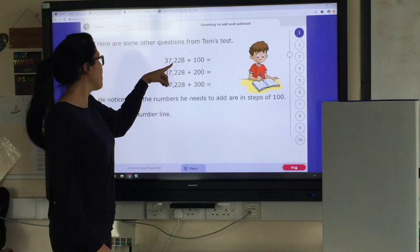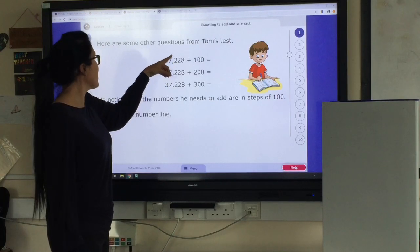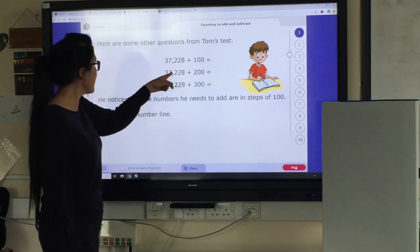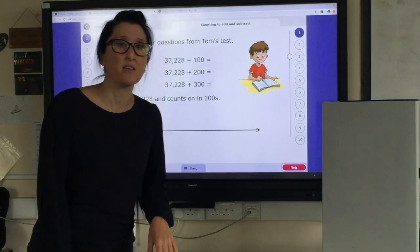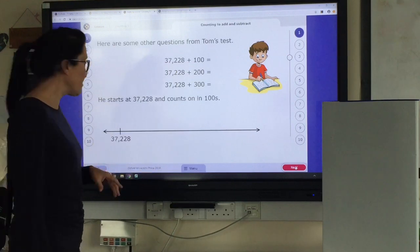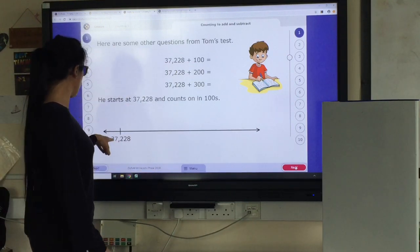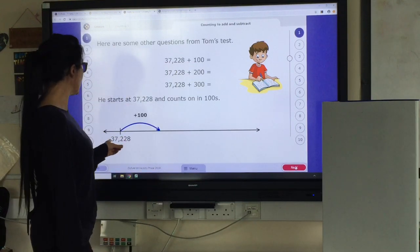So 200 add 100 would be 300. And then you can add 200 add 300. Again, Tom's using a number line to break it down. If you need to use a number line, absolutely fine. We start off with our number 37,228.